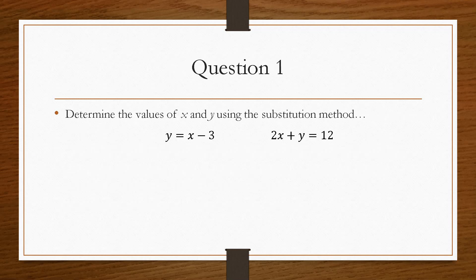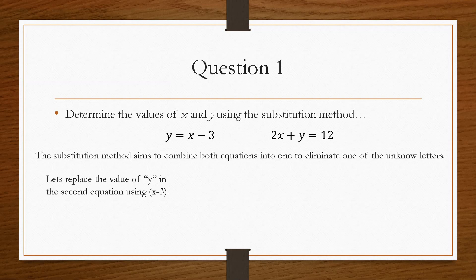So if we look at Question 1, it says determine the values of x and y using the substitution method. So the substitution method aims to combine both equations into one, which will ultimately eliminate one of the unknown letters. So what we mean by this is if we replace the value of y in the second equation with x minus 3, because we know that this is what y equals.